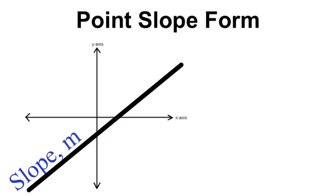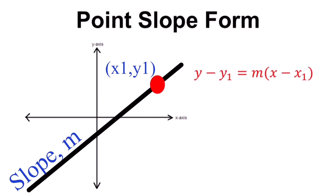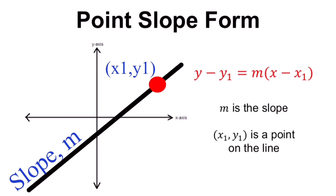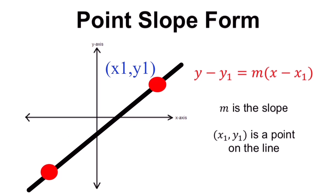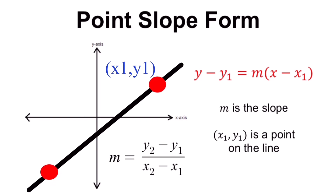If we are given the slope of a line and a point labeled x₁, y₁, we can determine the equation of this line using the formula y minus y₁ equals m times the quantity x minus x₁, where m is the slope and x₁, y₁ is a point on the line. Sometimes the slope is not given, but another point is given, and we can solve for the slope using those two points and still use the point-slope form.